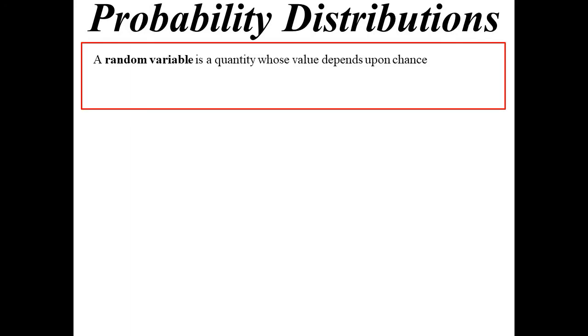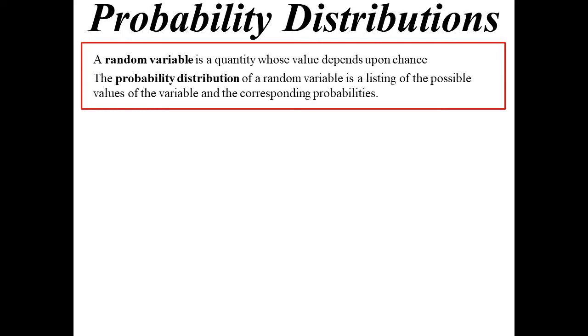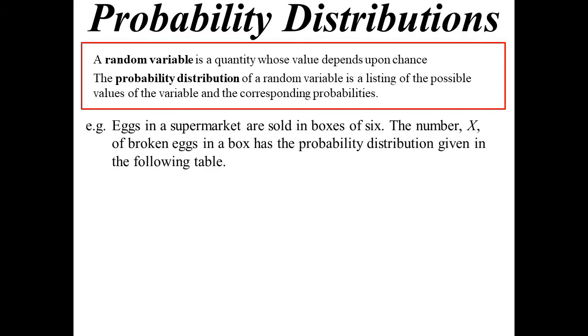Remember a random variable, which often we call capital X, is the quantity in the stats, the score. Then we create a probability distribution, which is a listing of all the possible values that X can take and their probabilities.